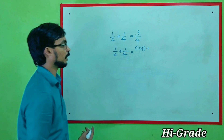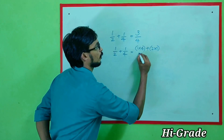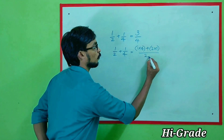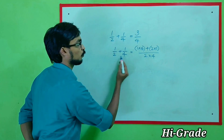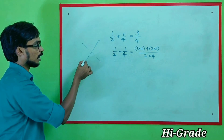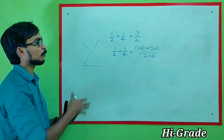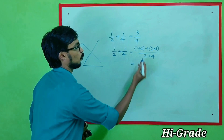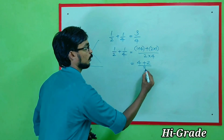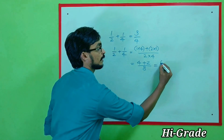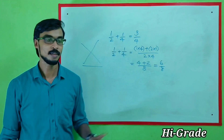One is also 4 plus. 2 into 1 divided by 2 into 4; 1 into 4 plus 2 into 1 divided by 2 into 4. Cross multiply, cross multiply — the same way, cross multiply. 1 into 4 is 4, plus 2 into 1 is 2, by 2 into 4 is 8. So 1 into 4 plus 2 is 6 by 8. Cross multiply.